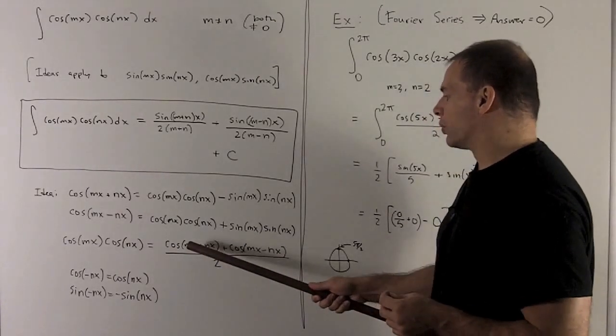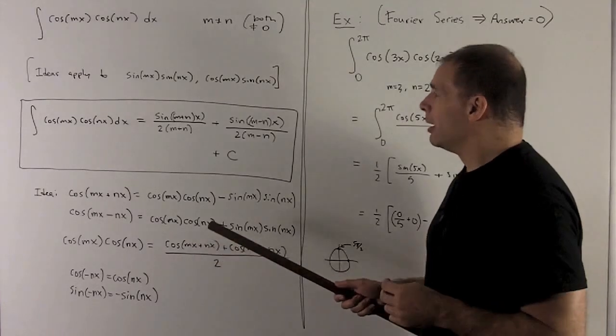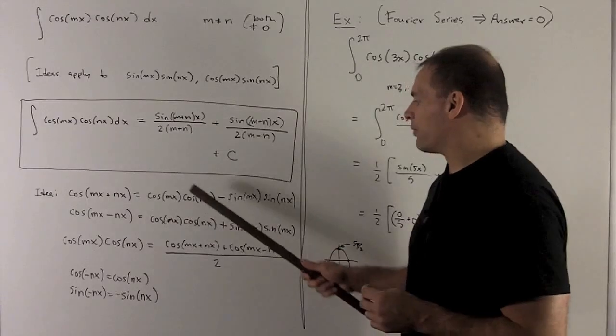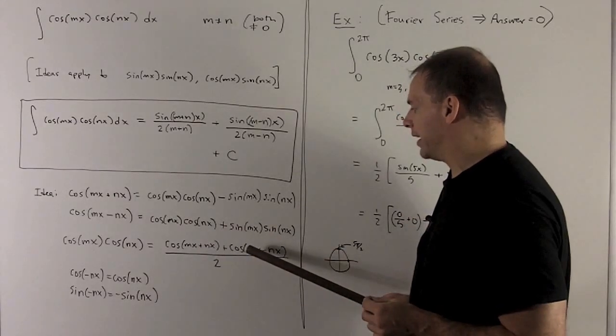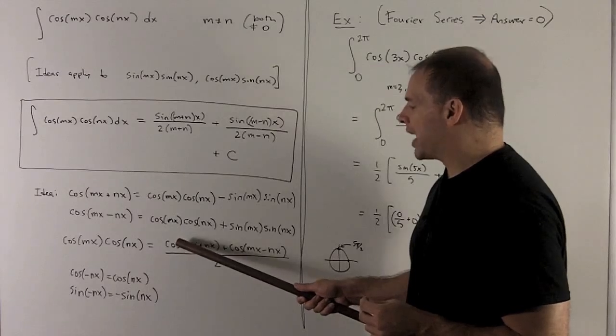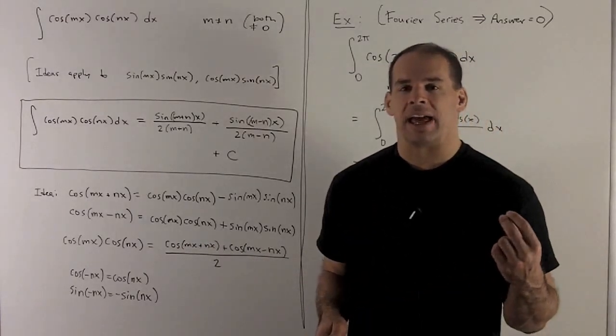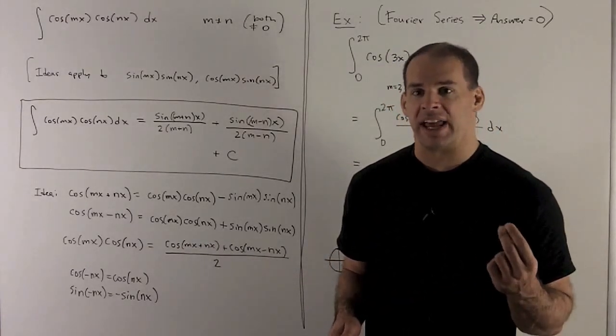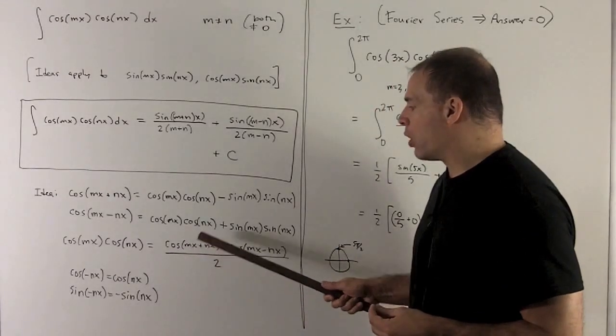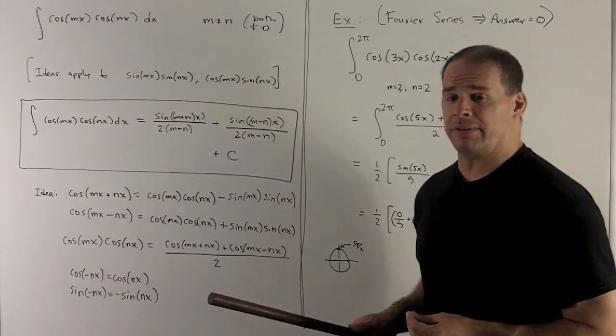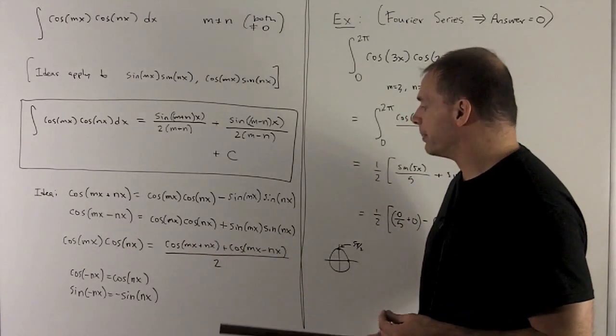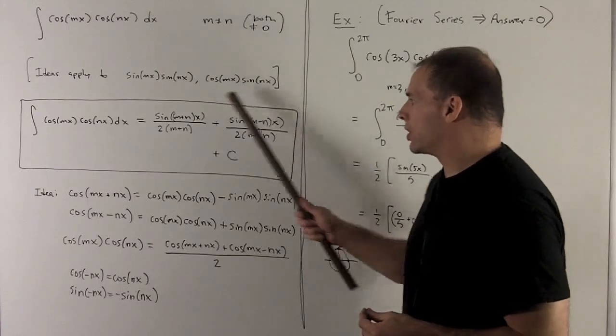This, we know how to take the antiderivative of, so this is the point. Before, we had no idea how to take the antiderivative of this, but using this identity, I've reduced it to two things I can definitely do the antiderivative of. Okay, so remember, how do I do cosine of a number times x? Well, I let that u be equal to m plus nx, and then that's just going to amount to flip the m plus n over, make this a sine, because sine is the antiderivative of cosine, and then it's just sine of m plus nx, similar here. So that's how I get this formula.